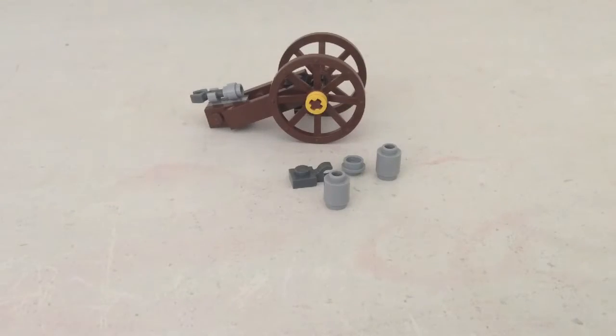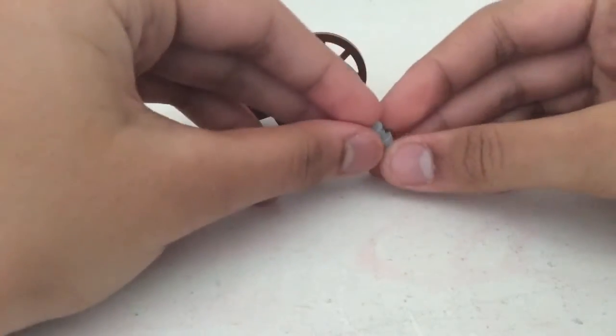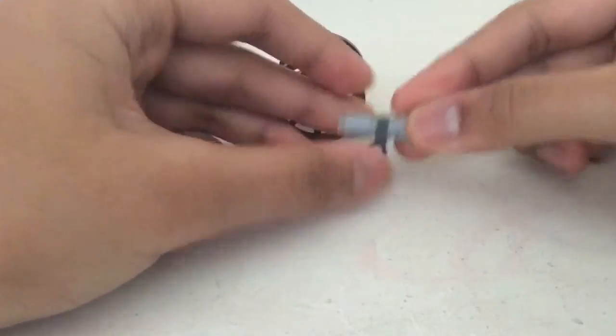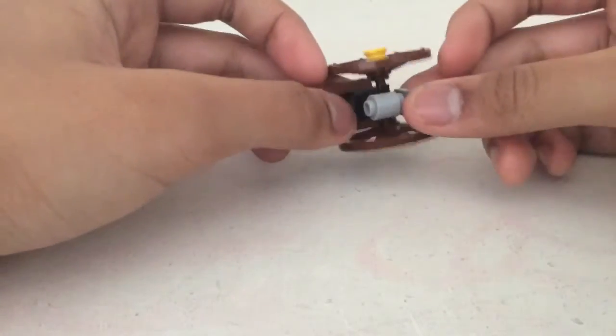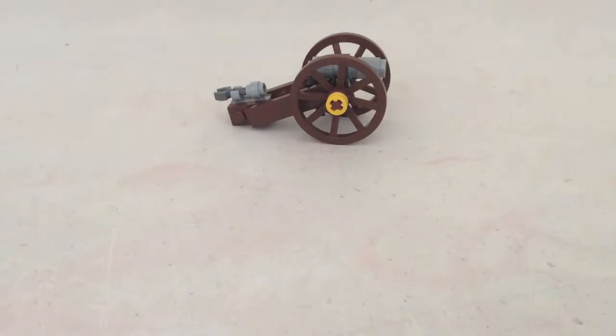This is the final part of the cannon. First, we need this brick, and put it here. And we put this brick on top, and put this here, and put this in the middle of the stick piece, and there we go.